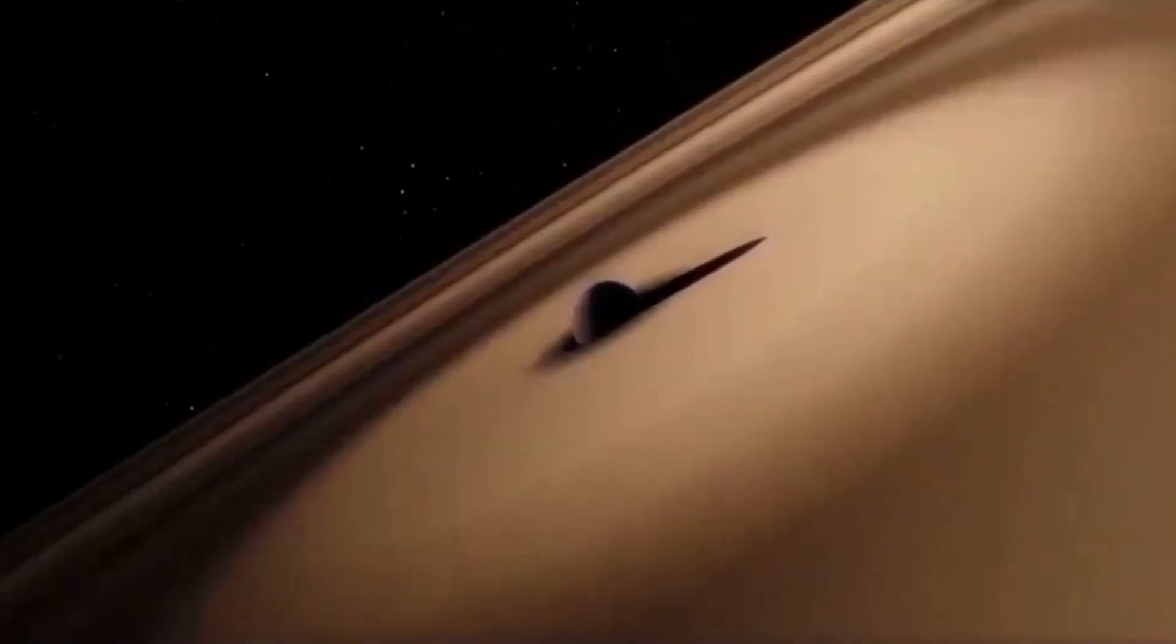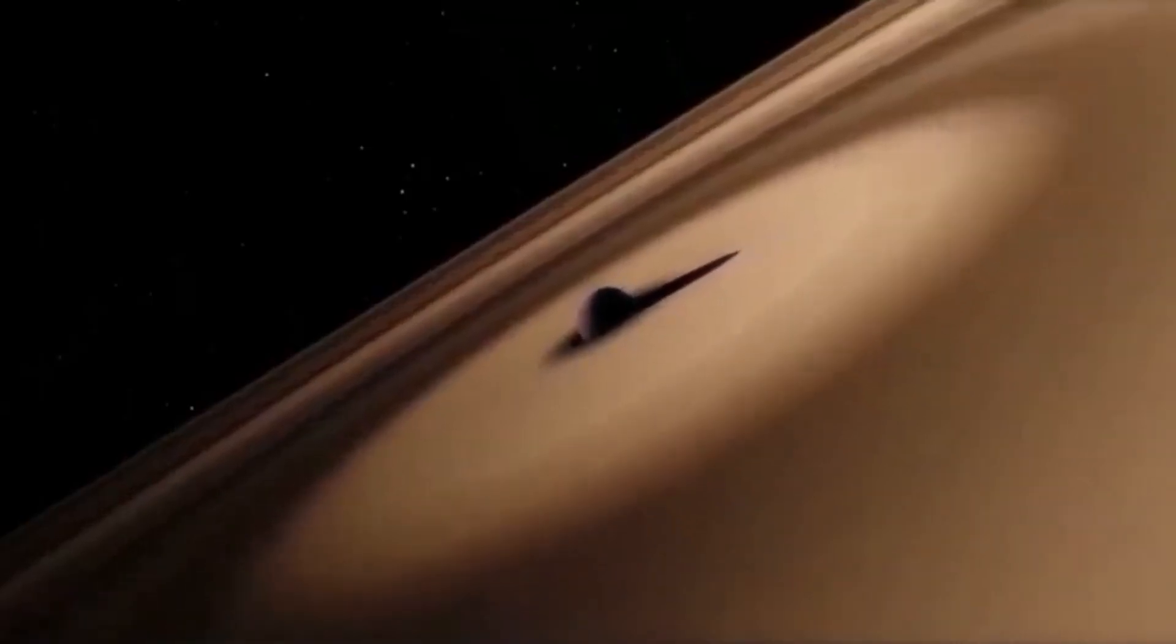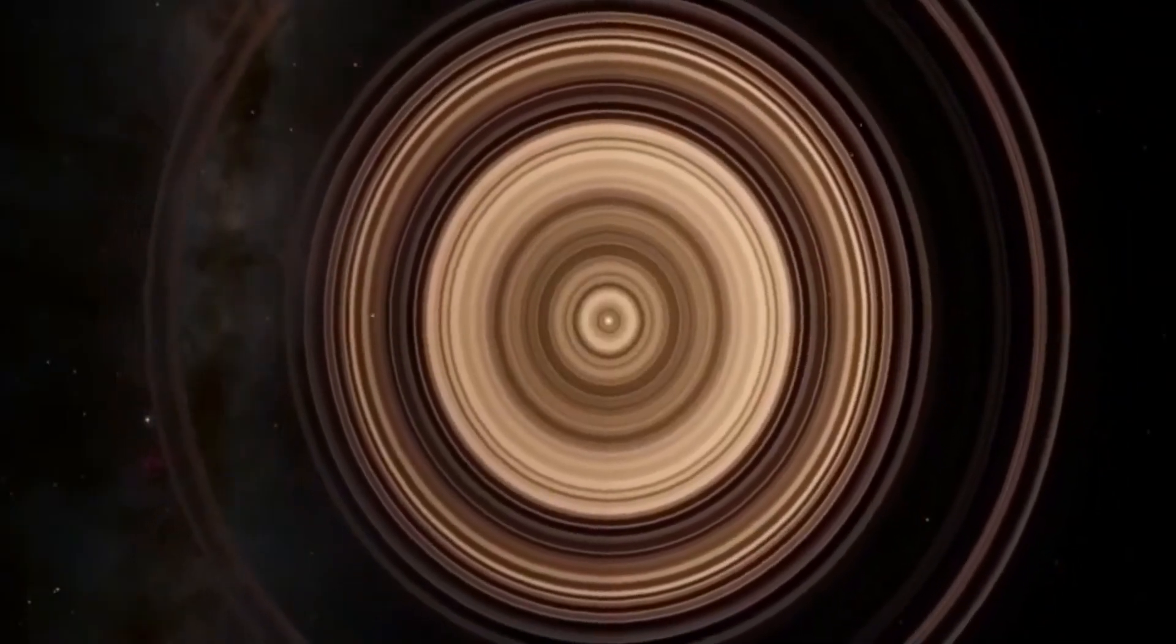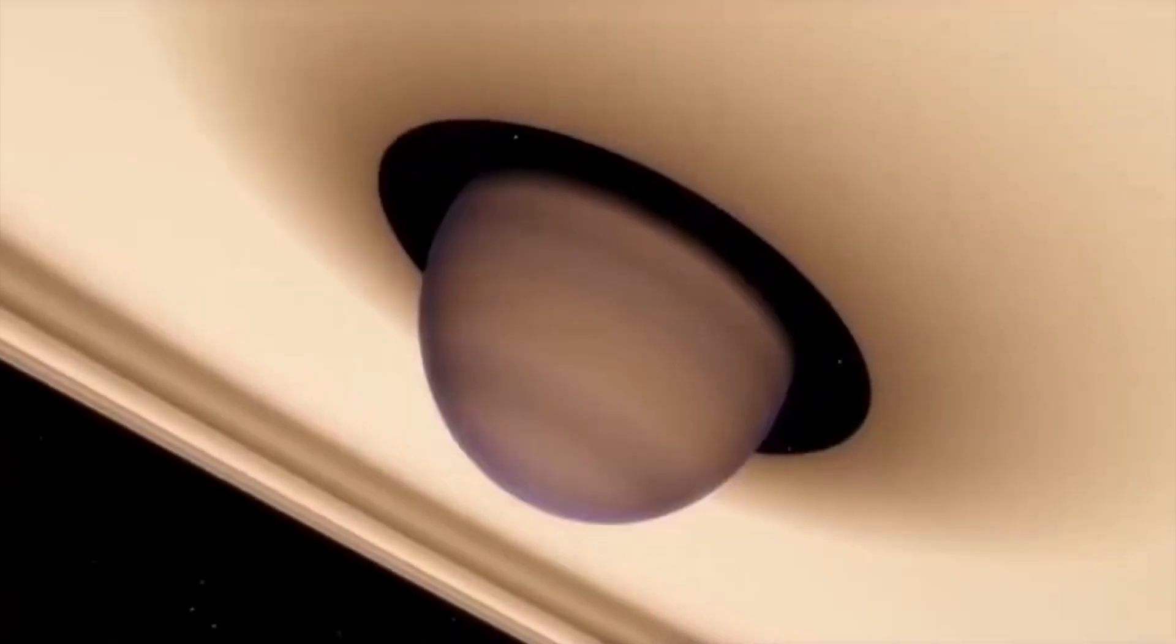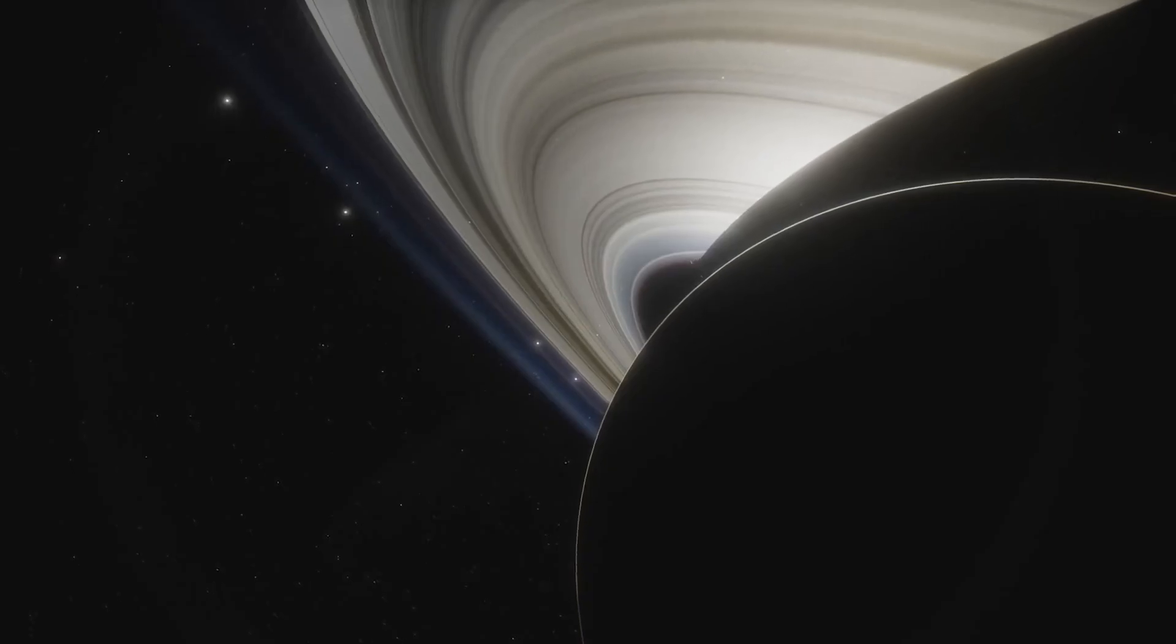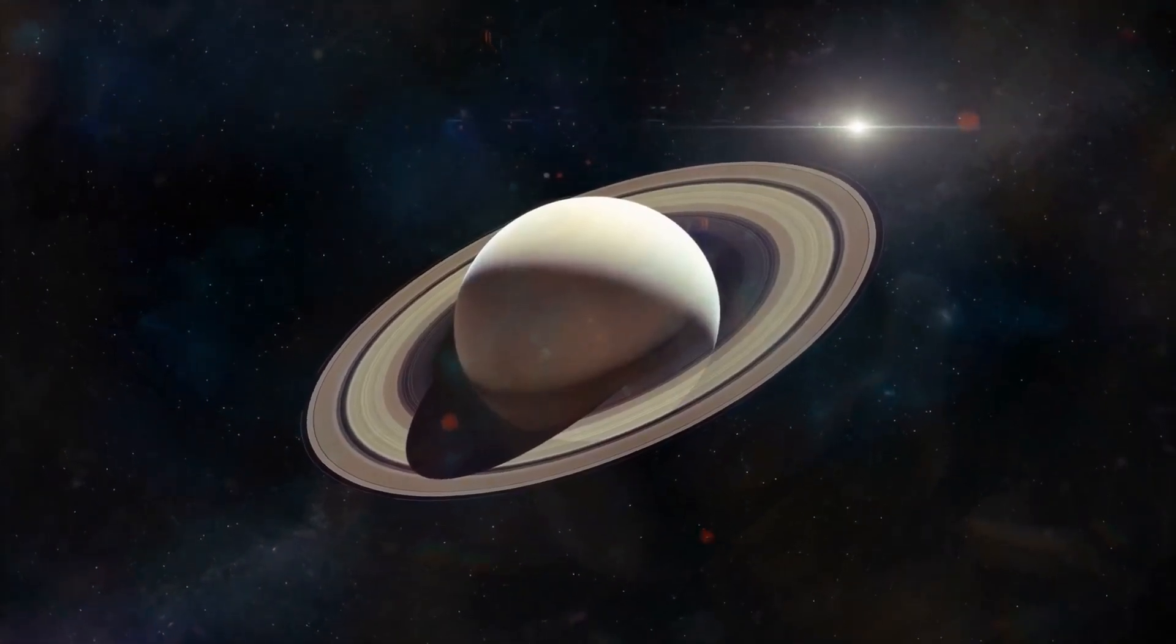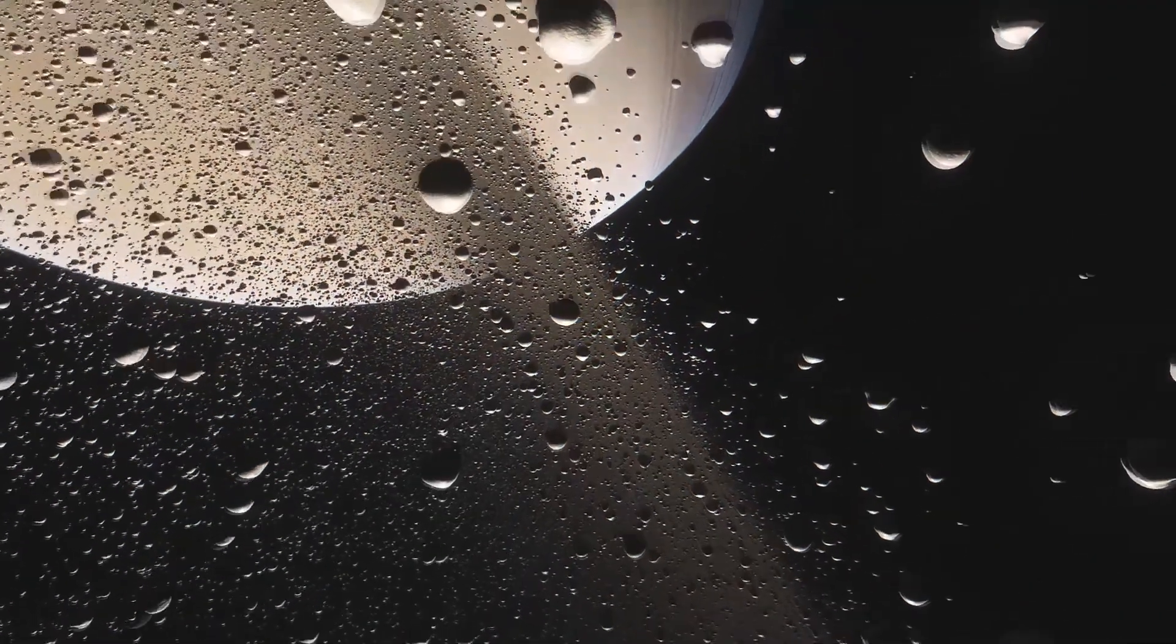This ring system is composed of more than 30 rings, each of which is tens of millions of kilometers wide. The rings are also extremely thick, up to 20 times the thickness of Saturn's rings. This makes the ring system of J1407b the largest known planetary ring system in the universe.